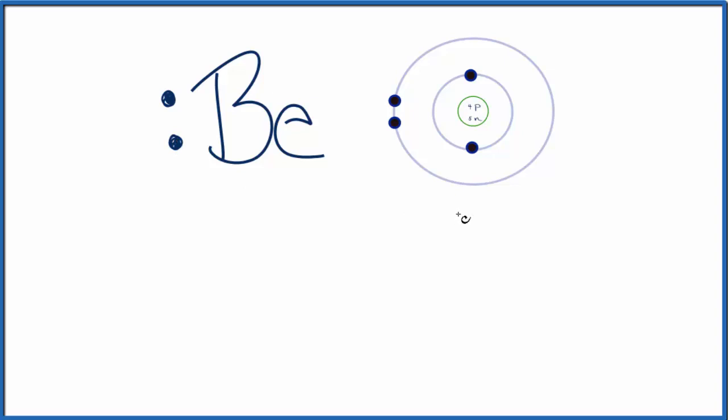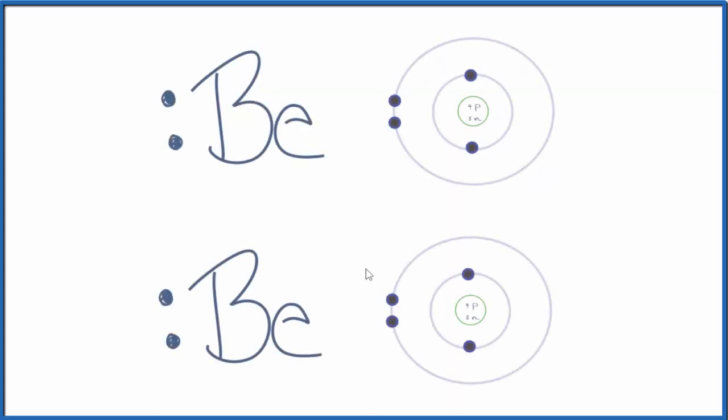But we're interested in Be2+. So when we have that 2+, that plus means we've lost a negative charge. If you lose a negative charge, you become more positive. So beryllium has lost two negative charges, and these electrons, those are the negative charges. So let's lose these two electrons here, and then we'll get rid of these, they're the same ones, and put our 2+ there.